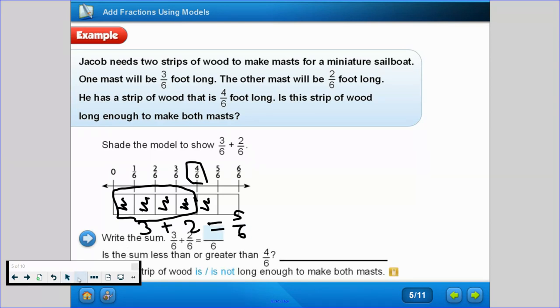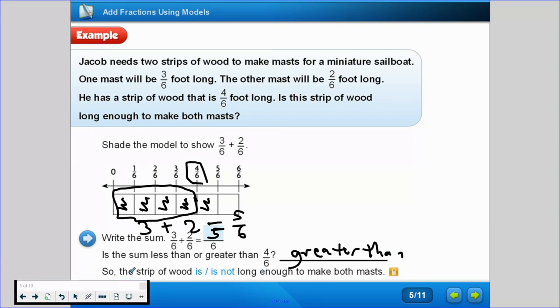So as we just said, the sum of 3/6 plus 2/6 equals 5/6. Is the sum less than or greater than 4/6? It's greater than. So the strip of wood is not long enough to make both masts.